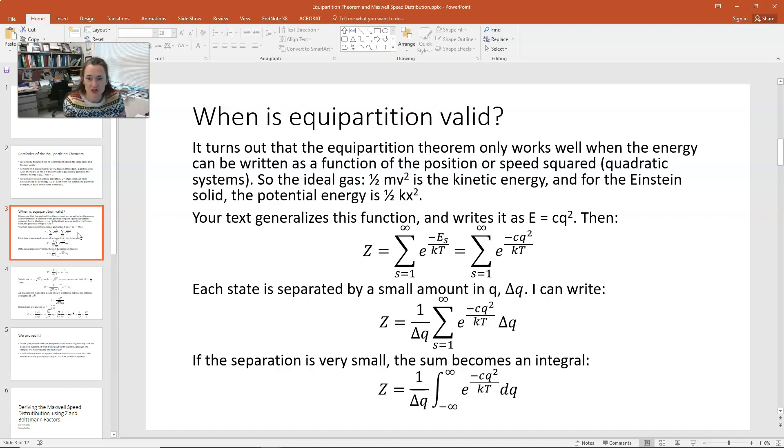Remember, that's our definition of our partition function is the sum over all the states of the Boltzmann factors for that state. So that would be the sum of e to the minus e sub s over kt, where e sub s is the energy of the state, k is Boltzmann's constant, and t is the temperature. That could be written for this cq squared thing, the summation over e to the minus cq squared over kt. Now, each state would be separated by a small amount in q. I'll call that delta q. So I could then write a 1 over delta q out front and then multiply times the delta q inside for each term, and that would be like multiplying by 1. So I can write z is equal to 1 over delta q times the summation over the states of e to the minus cq squared divided by kt times delta q.